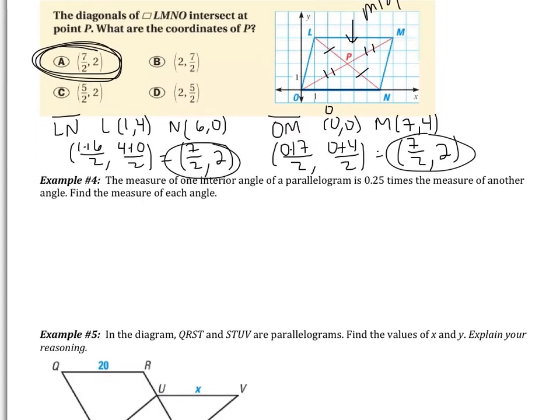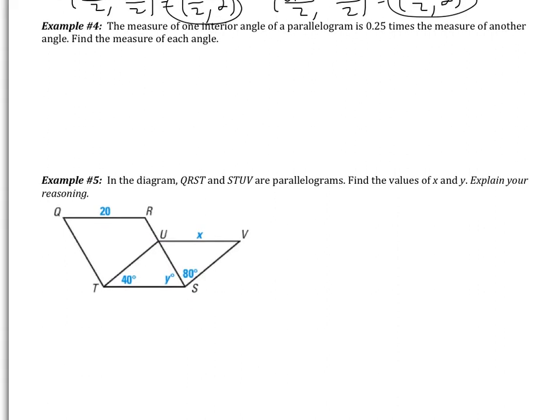Example four: the measure of one interior angle of a parallelogram is 0.25 times the measure of another angle. Find the measure of each angle. Pause the video and try this on your own — it involves the property at the top of this page. Good luck.